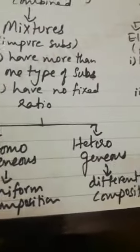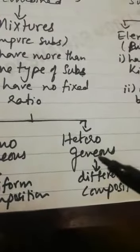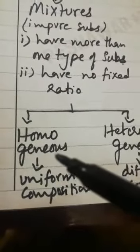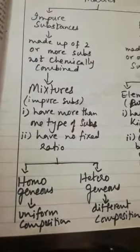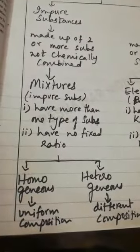Mixtures are further classified into two types: homogeneous and heterogeneous. 'Homo' means same and 'genus' means composition. A homogeneous mixture has uniform composition throughout its mass, while a heterogeneous mixture has different composition — its components have visible boundaries of separation. We will discuss mixtures in detail in our next lectures.